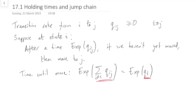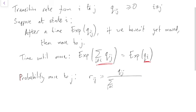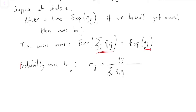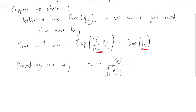What's the probability that any one particular alarm clock is the one that goes off first? From the same theorem, the probability that alarm clock j is the one that goes off — and therefore we move to j — is the rate to j divided by the sum of the rates. We'll call this r_ij, defined as q_ij over q_i. If i is an absorbing state where you never leave, r_ii is 1 and r_ij is 0 for anything else.